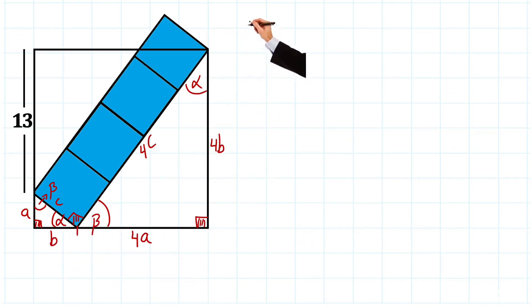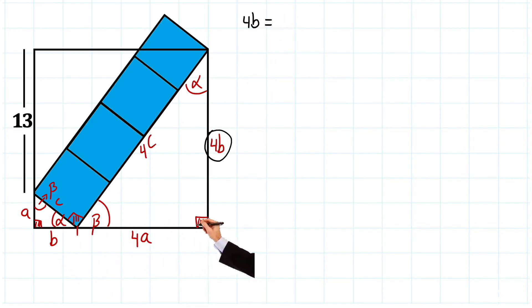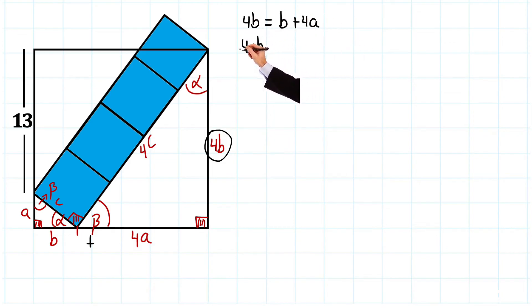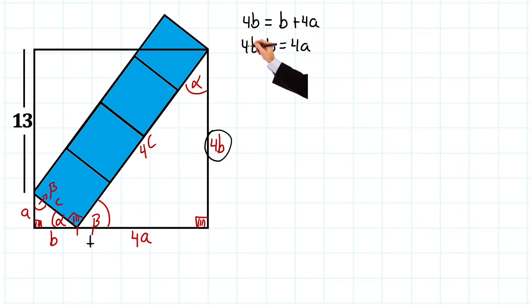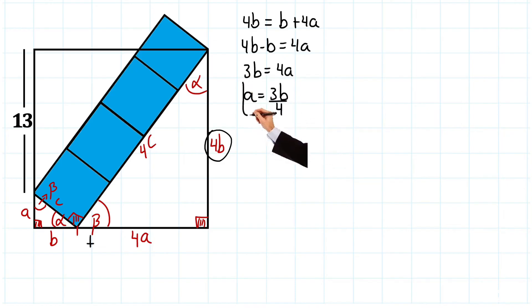Fantastic. Once we have everything labeled, let's note what we have. All sides of the square must be equal, so 4 times b is going to be equal to this side here, but this side here is b plus four times a. Let's write it down: 4b = b + 4a. We can solve for a by moving the b to the other side: 4b minus b equals 4a. That gives us 3b equals 4a, so a is equal to 3b over 4.